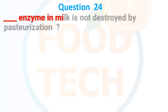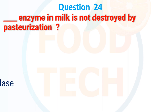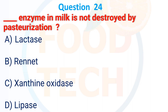Which enzyme in milk is not destroyed by pasteurization? A. Lactase, B. Renate, C. Xanthine oxidase, D. Lipase. The answer is C. Xanthine oxidase.